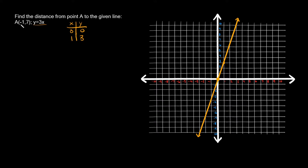Now we're going to graph our point A, which is at negative 1, 7. So negative 1, 7 is right there — that's point A.